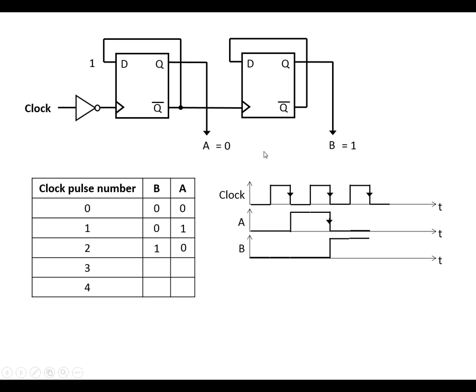Next clock pulse coming in. Again, we've got the falling edge here. It causes this to trigger. So D gets copied to Q. A becomes a 1. Q bar is going to be a 0. That's gone from 1 to 0. Nothing's going to change with B.